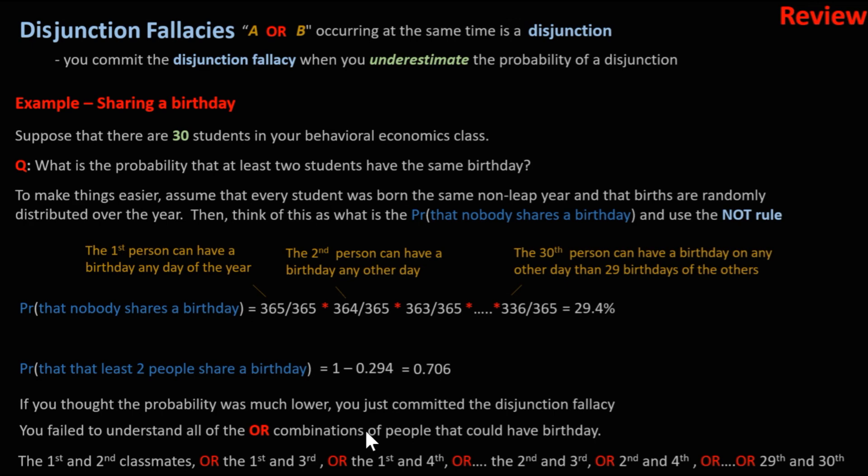Then it could be the second and third person, and second and fourth person, and so on. We have all of these OR possibilities. With OR possibilities, we end up having to add them together, and so often we underestimate the probability of a disjunction.